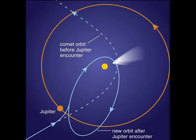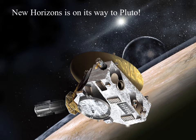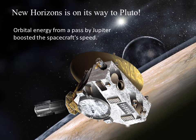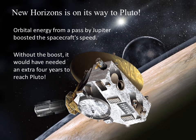This figure shows a comet headed toward the Sun on an unbound orbit. The comet's close passage by Jupiter allows the comet and Jupiter to exchange energy. Spacecraft engineers use this idea in reverse. For example, on its way to Pluto, the New Horizons spacecraft was deliberately sent past Jupiter on a path that allowed it to gain energy at Jupiter's expense. This extra orbital energy boosted the spacecraft's speed. Without the boost, it would have needed an extra four years to reach Pluto.